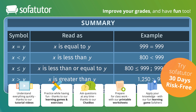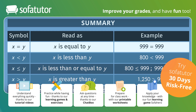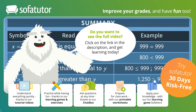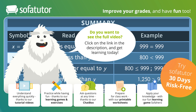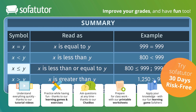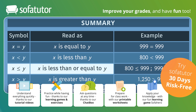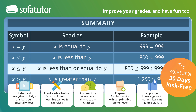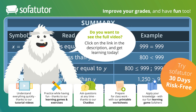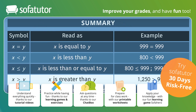To describe each situation, we use different signs. The sign for equality is the equal sign — use this if the two values are exactly the same, like x is equal to y or 999 is equal to 999. For an inequality, however, there are four different signs at our disposal. We use the less than sign when the value on the left is smaller than the value on the right, like 800 is less than 999. We use the less than or equal to sign if the value on the left is smaller than or the same as the value on the right — 800 and 999 are both less than or equal to 999. We use the greater than sign when the value on the left is larger than the value on the right, like 1,250 is greater than 999.